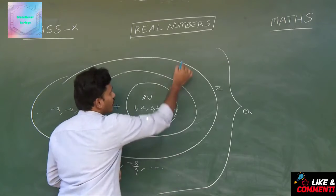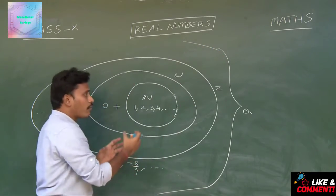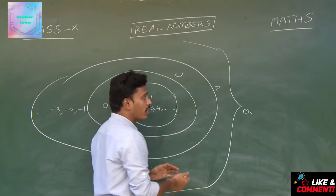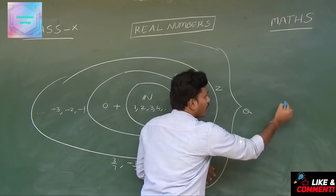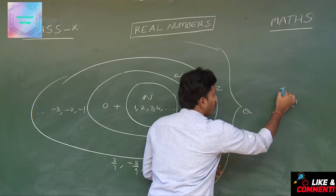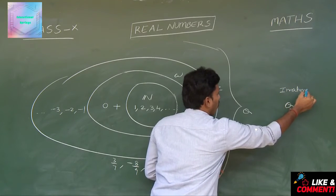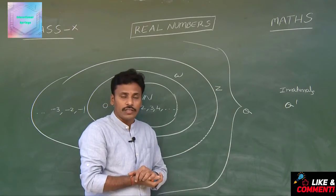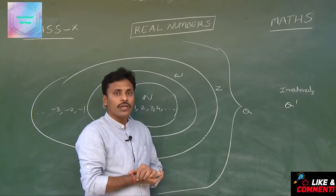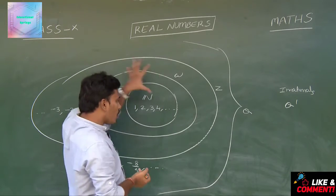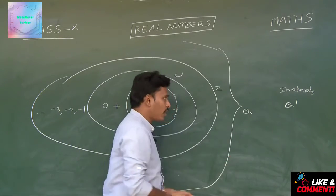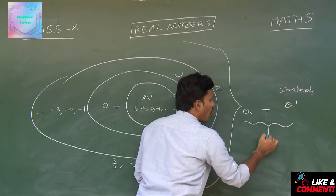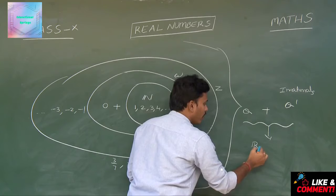Irrationals are somewhat different from rationals. Irrational numbers are the numbers which are neither terminating nor repeating decimals — examples include root 2, root 3, and so on. The combination of rational numbers and irrational numbers together is nothing but our real numbers.